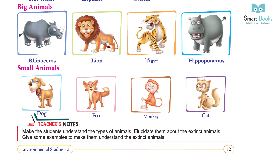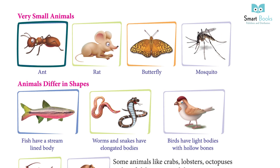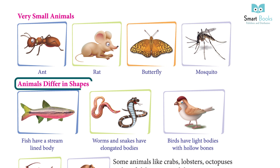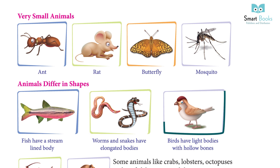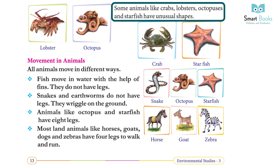Big animals include rhinoceros, lion, tiger, and hippopotamus. Small animals include dog, fox, and monkey, cat. Very small animals include ant, rat, butterfly, and mosquito. Animals differ in shapes: fish have a streamlined body, worms and snakes have elongated bodies, birds have light bodies with hollow bones.